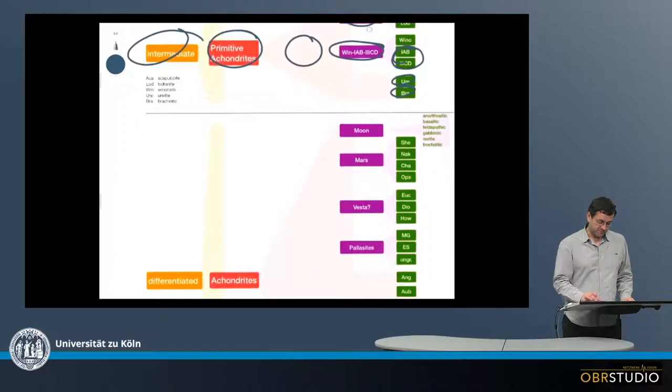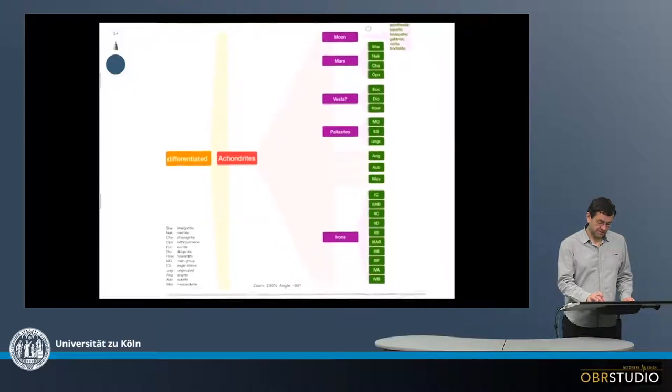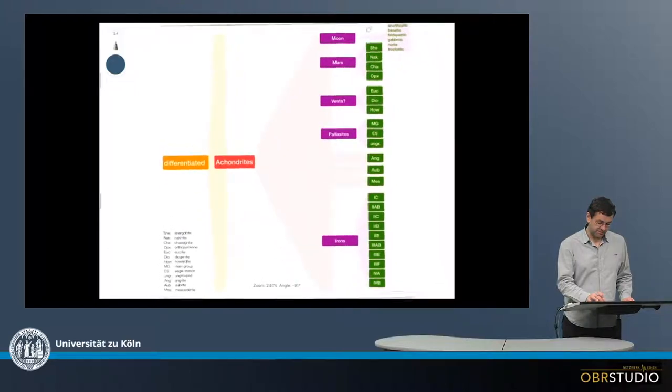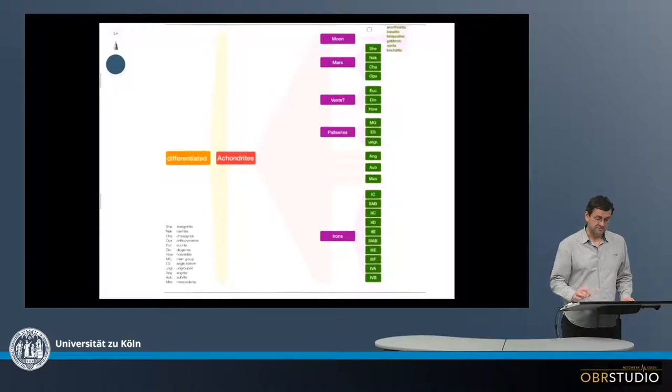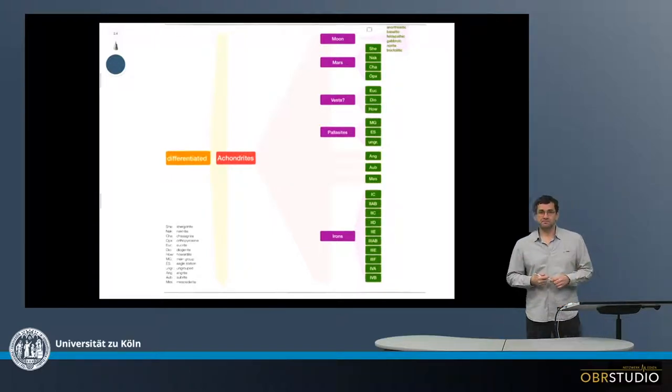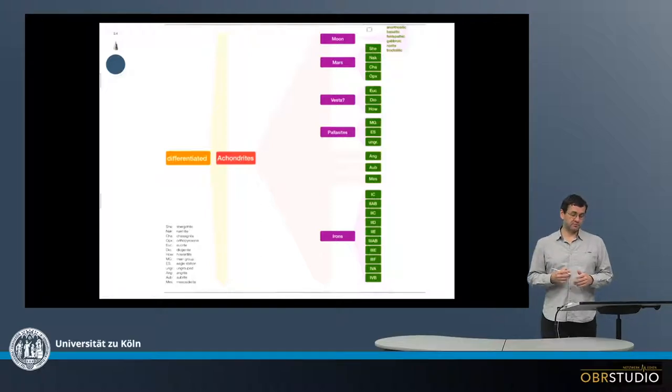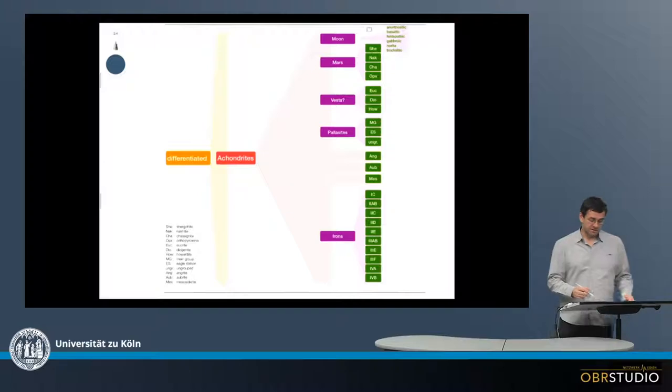And for the last one, these are from differentiated parent bodies. These really are parent bodies that underwent differentiation into a core, into a mantle, such as, for example, here, the Moon. So these are really achondrites. There's nothing primitive about them anymore.